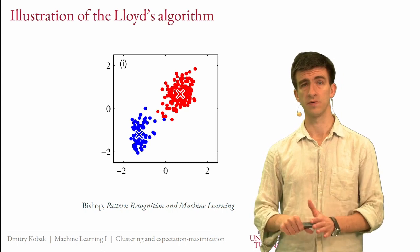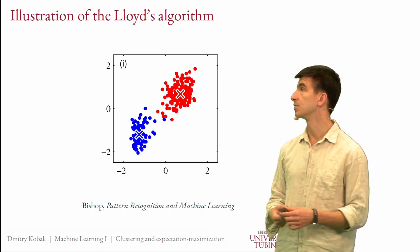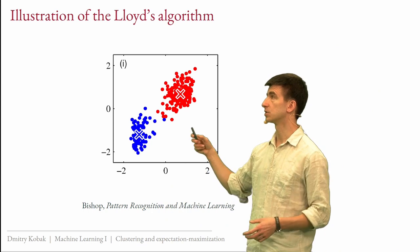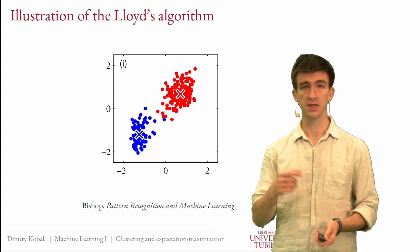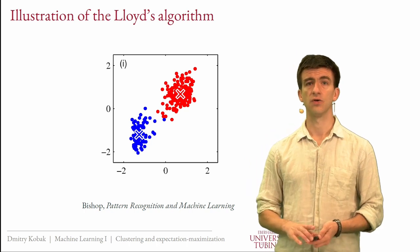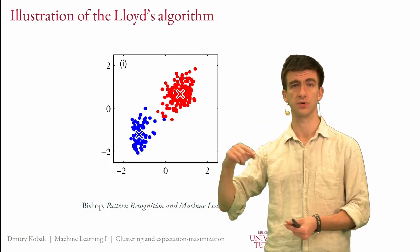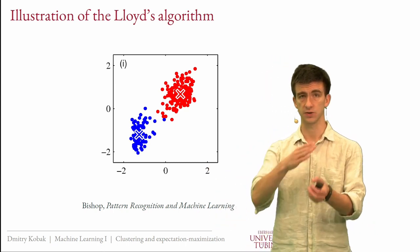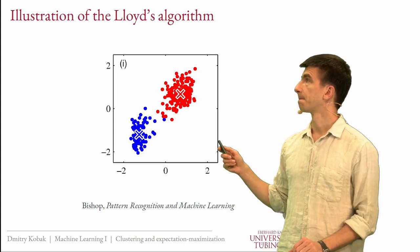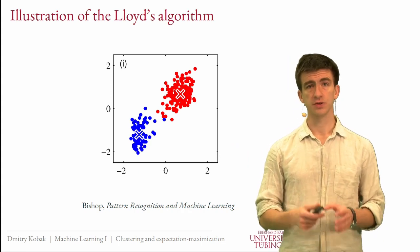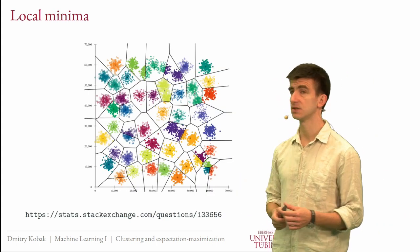It is actually easy to see that Lloyd's algorithm will always converge to some minimum — a local minimum in this case. There is just a finite number of ways to split points into classes, and each step of Lloyd's algorithm decreases or leaves unchanged the loss function. So the loss will never go up during iteration. Since there are a finite number of ways to reassign points, at some point you will converge.